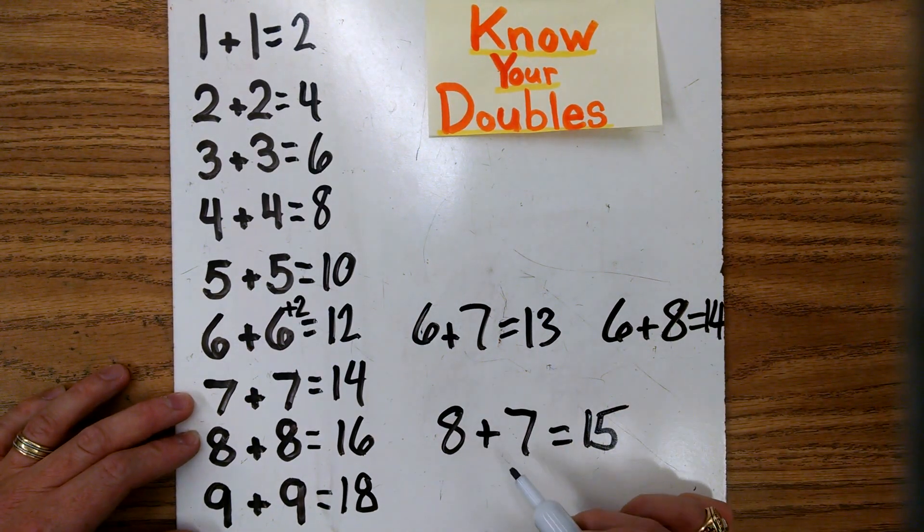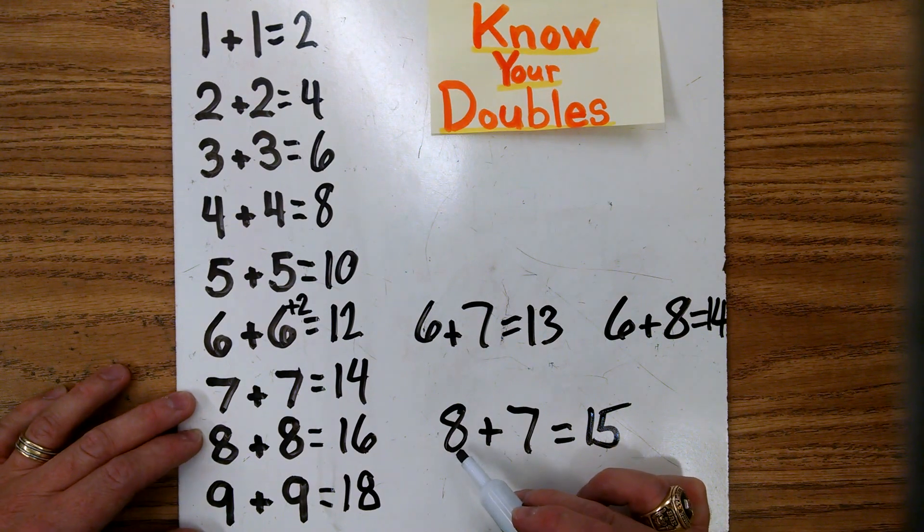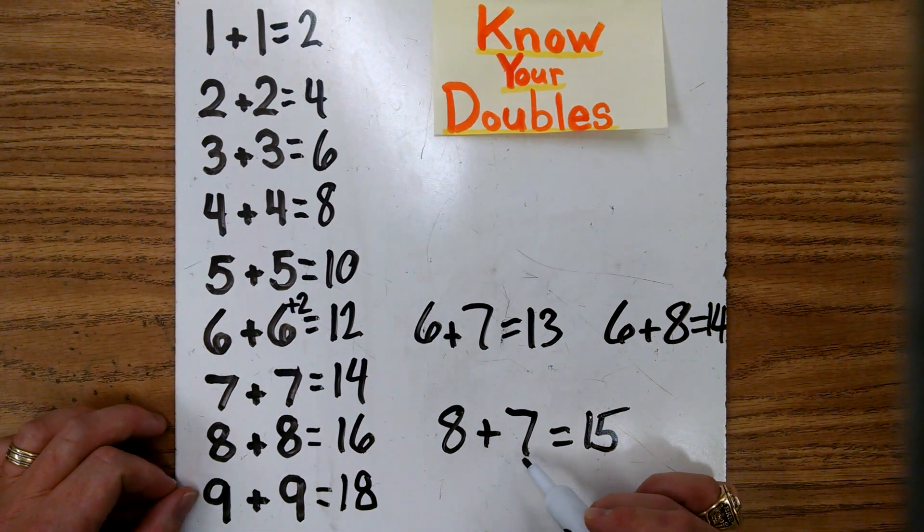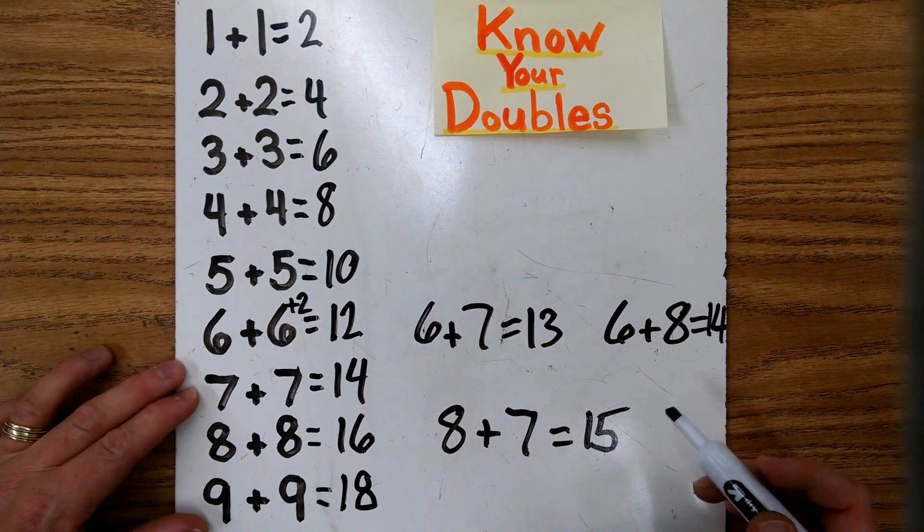Or if you were to know that 8 plus 8 is 16 and 7 is one less, one less is 15.